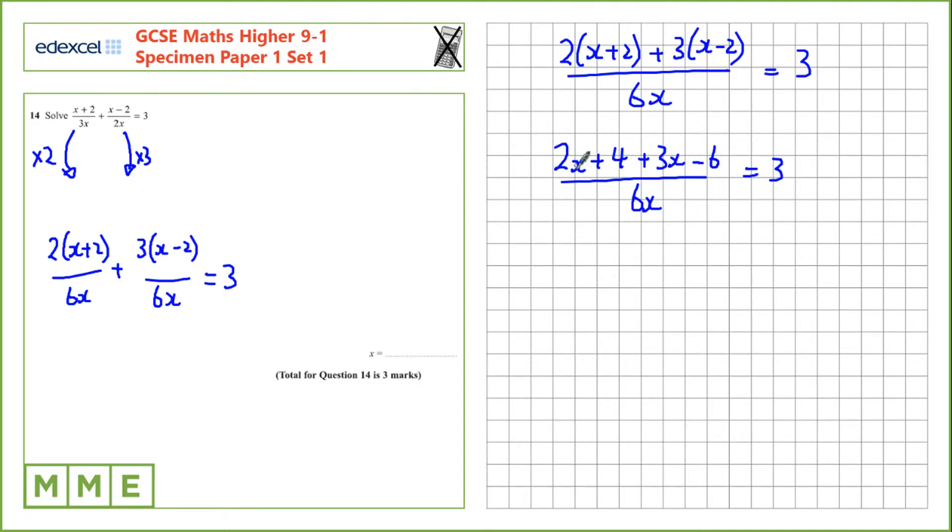Now we can collect up the terms in x on the top. So, we've got 2x plus 3x, which is 5x, and 4 take away 6, which is minus 2.